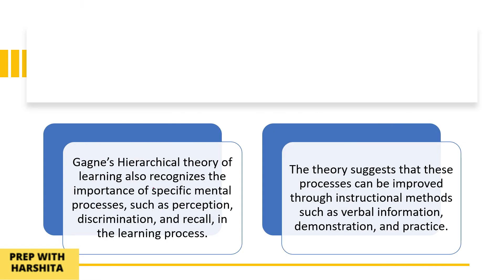This theory also recognized the importance of specific mental processes such as perception, discrimination, and recall in the learning process. The theory suggests that these processes can be improved through instructional methods such as verbal information, demonstration, and practice.